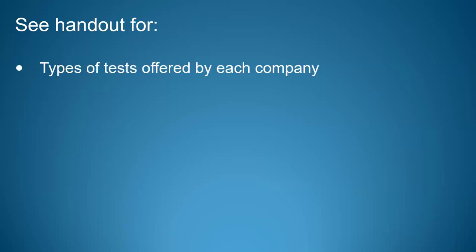Everybody should have received a handout for this presentation. On that handout you'll find information about what types of tests each company offers. In a nutshell, FamilyTreeDNA is the only company currently offering Y-DNA testing and mitochondrial DNA testing — it also offers autosomal DNA testing. All of the other companies are selling only the autosomal DNA test, which can help trace all the way up to your fourth great-grandparent.